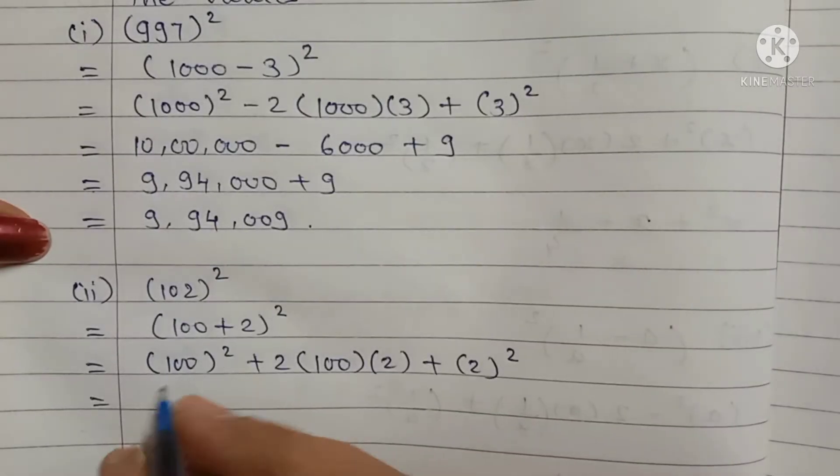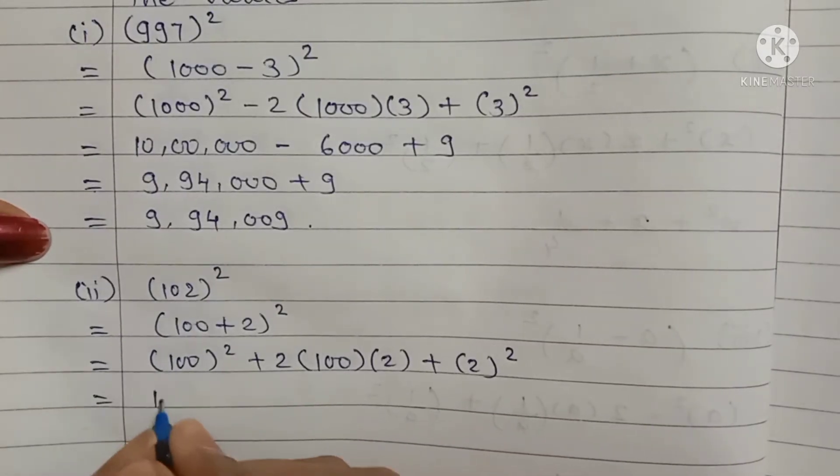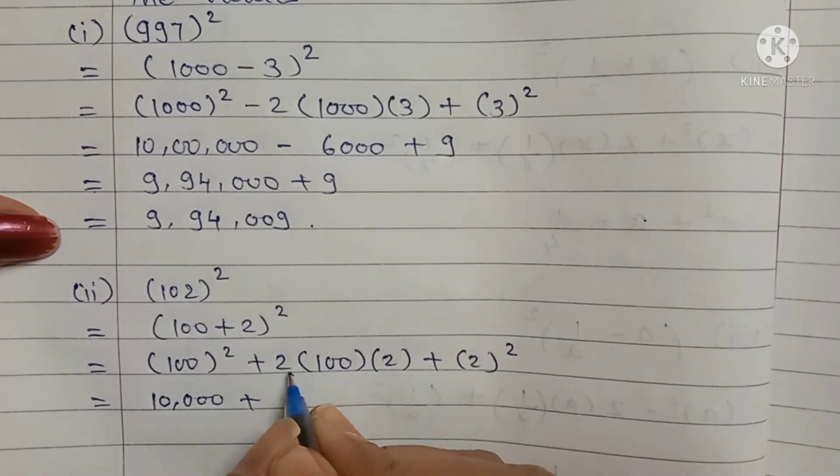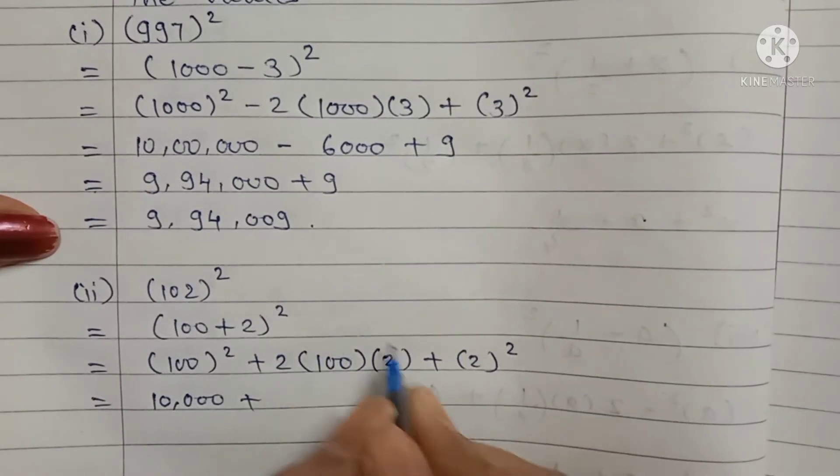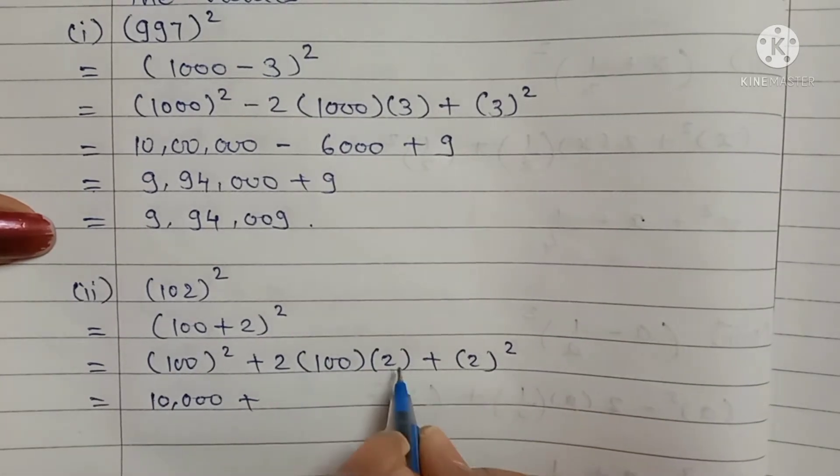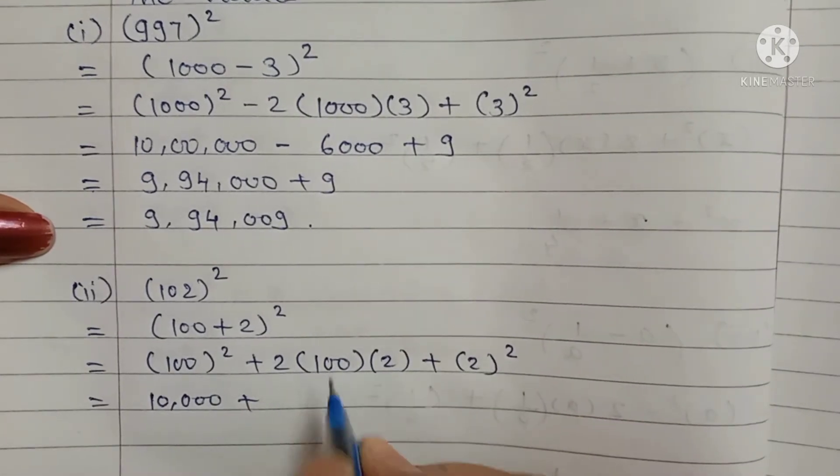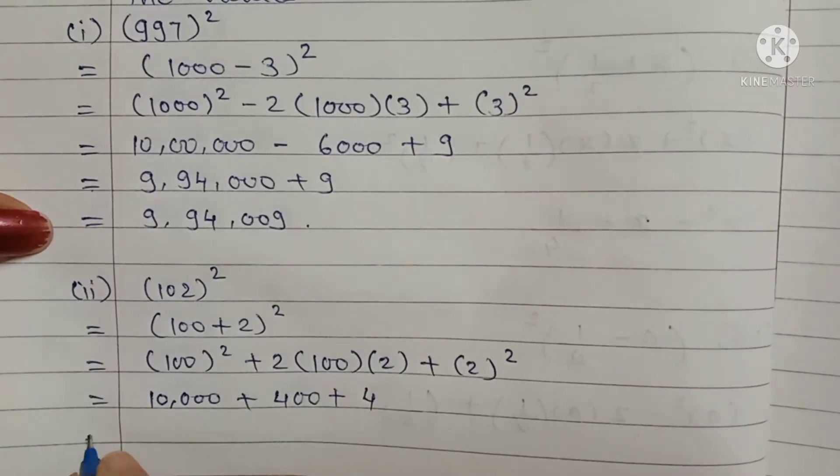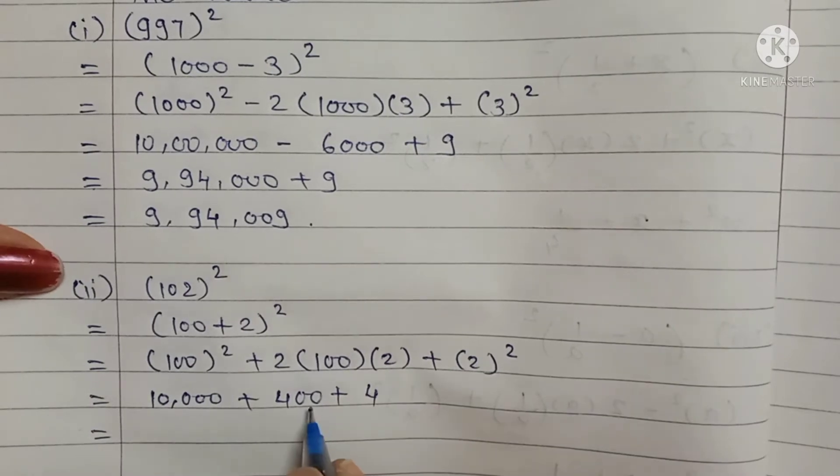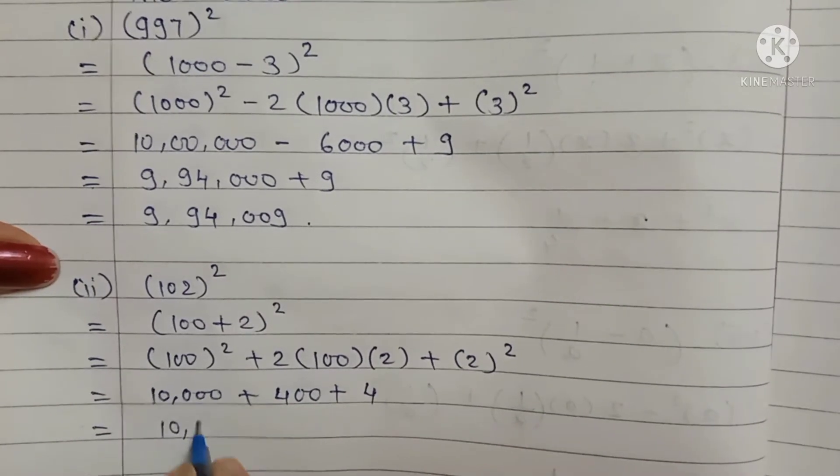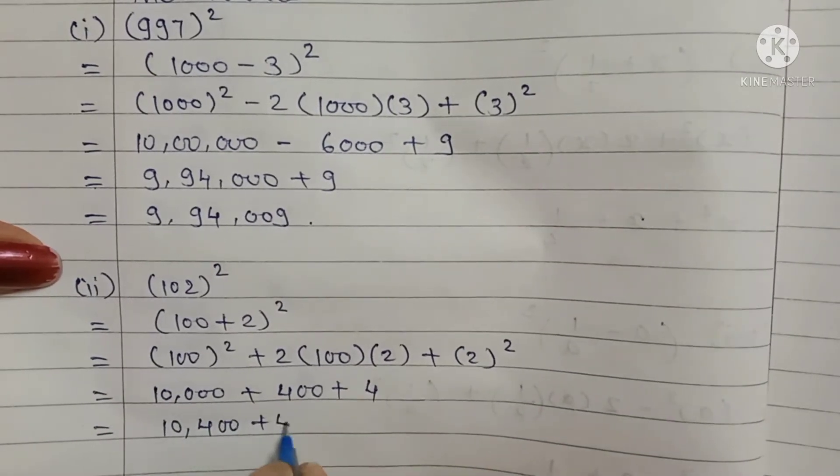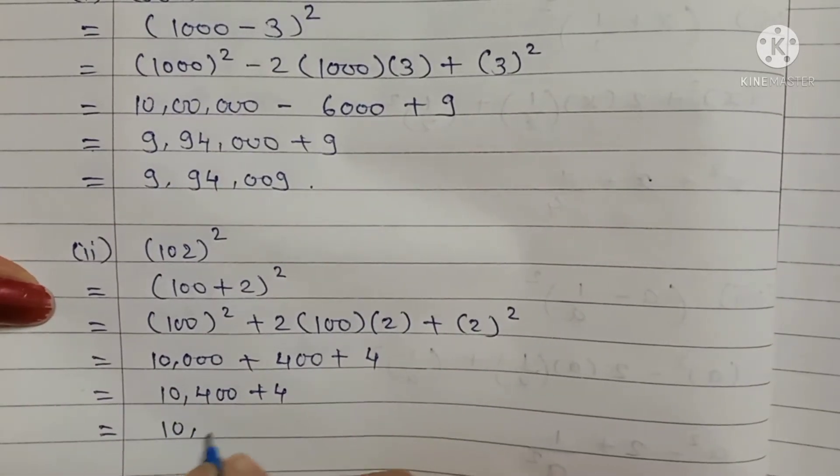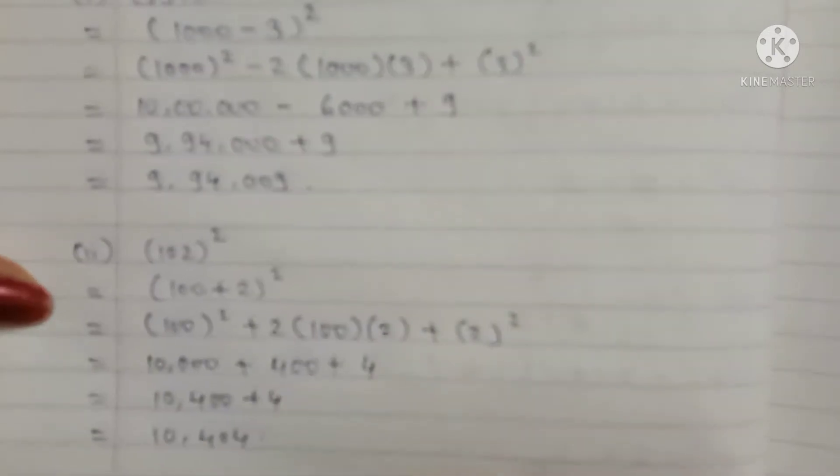100 square is 10,000 plus 100 into 2 is 200, 200 into 2 is 400, plus 2 square is 4. Now addition: 10,000 plus 400 is 10,400 plus 4. The addition is 10,404.